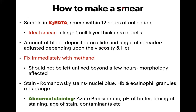I will just quickly cover the most important things to remember about how to make a smear. The sample should be taken in dipotassium EDTA anticoagulant, and the smear should ideally be made within 12 hours of collection when the sample is stored at 4 to 8 degrees Celsius. The ideal smear will have one large area that is one cell layer thick, because we need to examine the morphology in an area which is one cell layer thick.